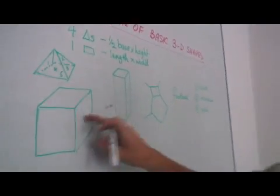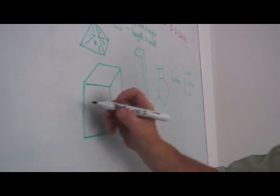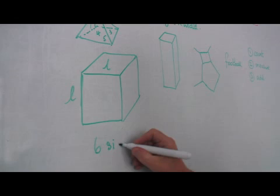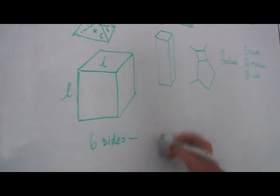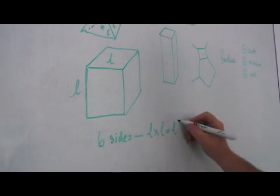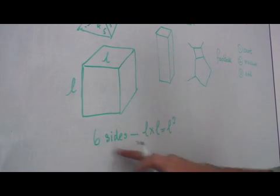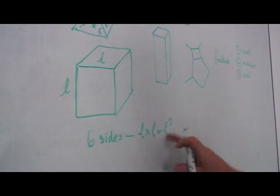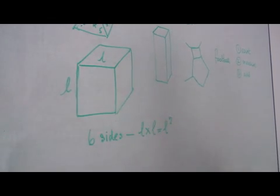A cube is very simple, because a cube is always the same dimension. So it has six sides. Each is L times L, which is L squared. I can work out, therefore, the area of one side, and then multiply by six to get the surface area.